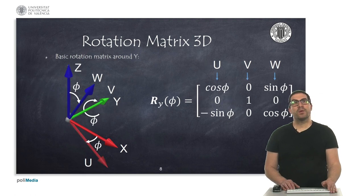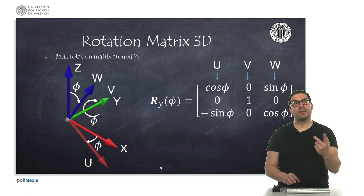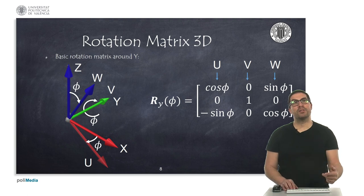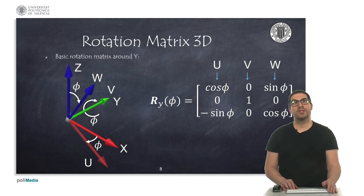If we make a rotation around the y-axis, the v vector is aligned with the y-axis and is not modified, but the u and w vectors are modified with the corresponding angle. The analytic expression is the one shown in the slide.